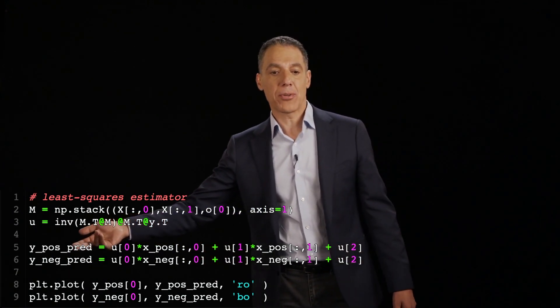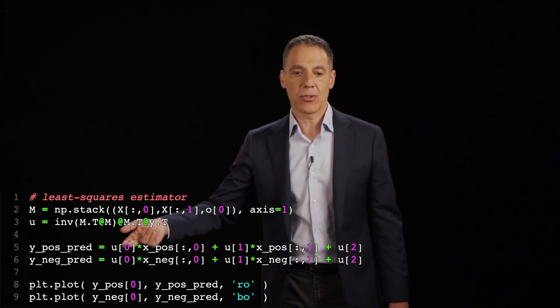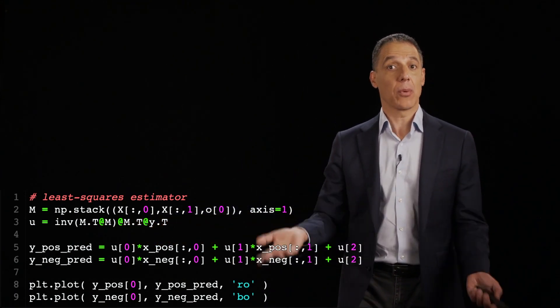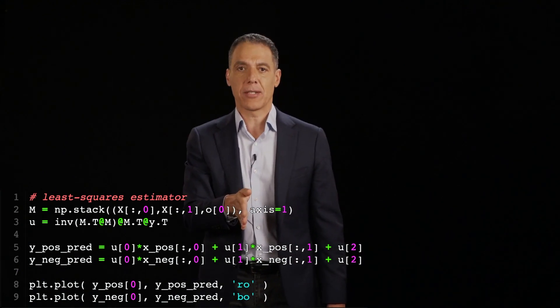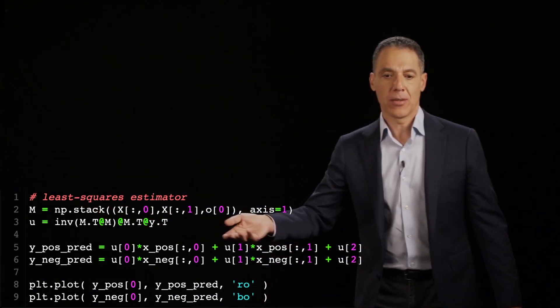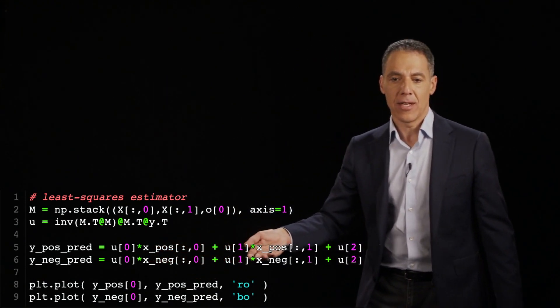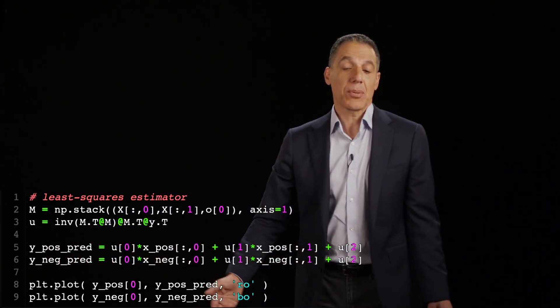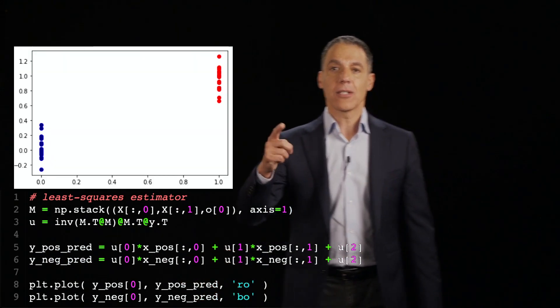So what is my prediction? Take the 0th and the first coordinate of the positive labels that you see here and multiply it by U sub 0, U sub 1, and then add U sub 2. That was what the model was. Take the horizontal coordinate multiplied by the first model parameter, take the vertical coordinate multiplied by the second model parameter, and then add the third model parameter. And then the predicted Y is over here. Same thing. I've got the X negative, X negative, and then the constant term here. So these are my predictions. And then I can plot to see how well I did. How well did I predict the labels?